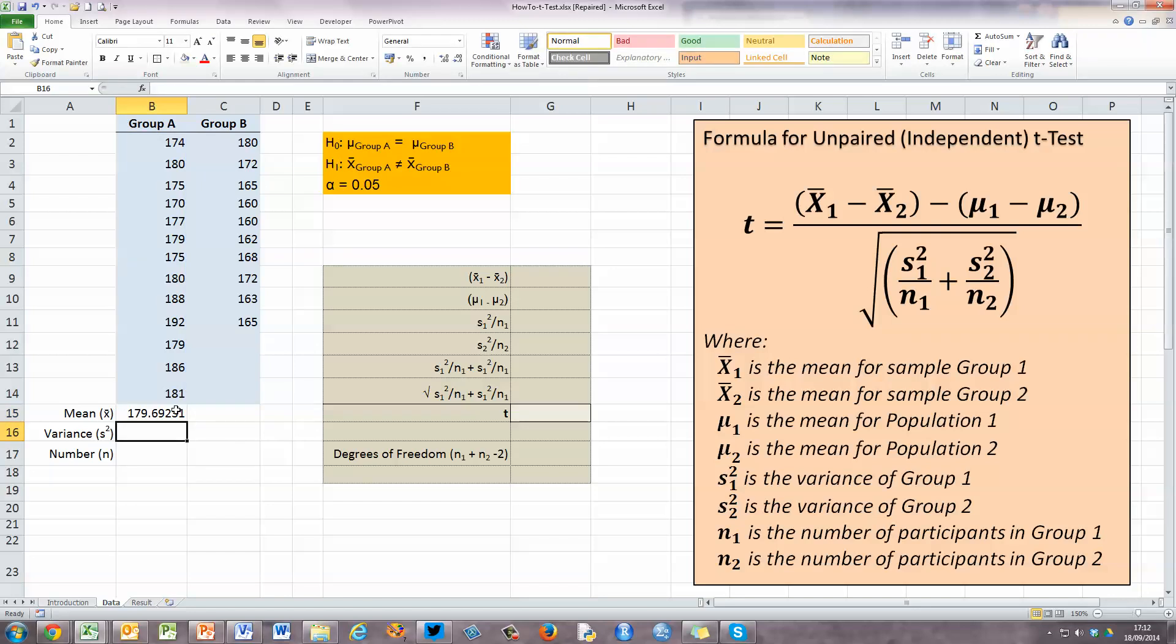I now need to calculate the variance for each of these. So I'm going to just use again Excel's VAR.S variance formula for sample variance and opening bracket and select all my data under group A, closing bracket and press enter. And finally, for group A, I need to calculate the number of participants in group A, or group 1.